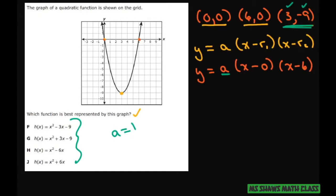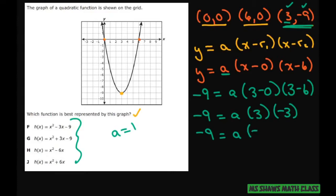So let's look and see what happens with that. So we have negative 9 equals A and our x is 3. So plug in 3 minus 0 times 3 minus 6. So we have negative 9 equals A times 3 times negative 3. So negative 9 equals A times negative 9. Divide both sides by negative 9 and you get A equals 1.